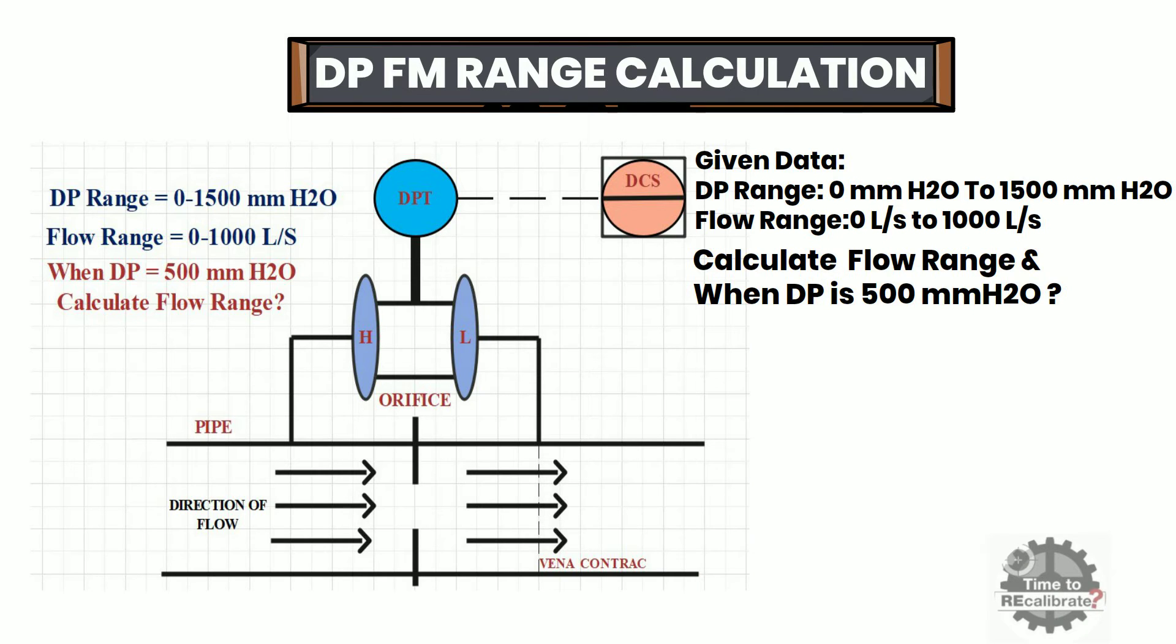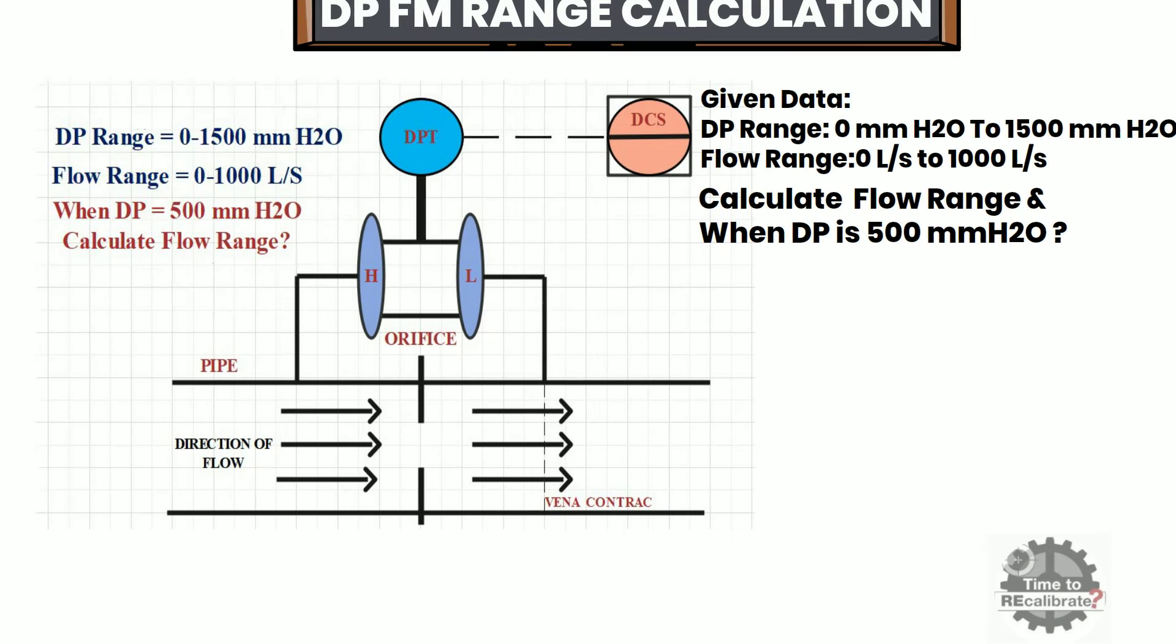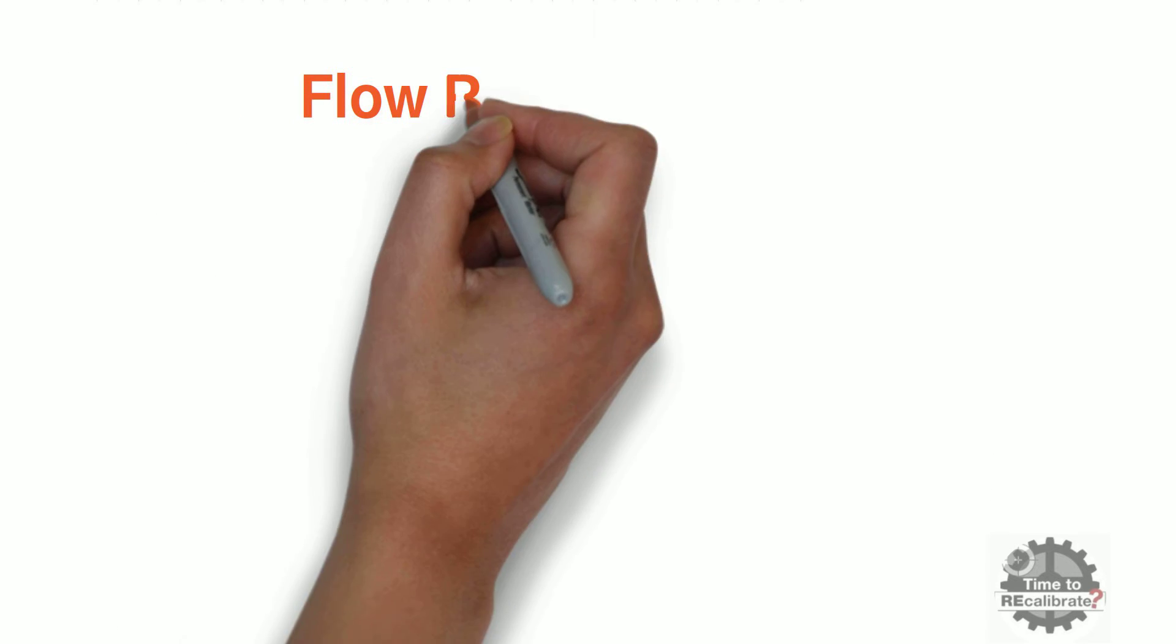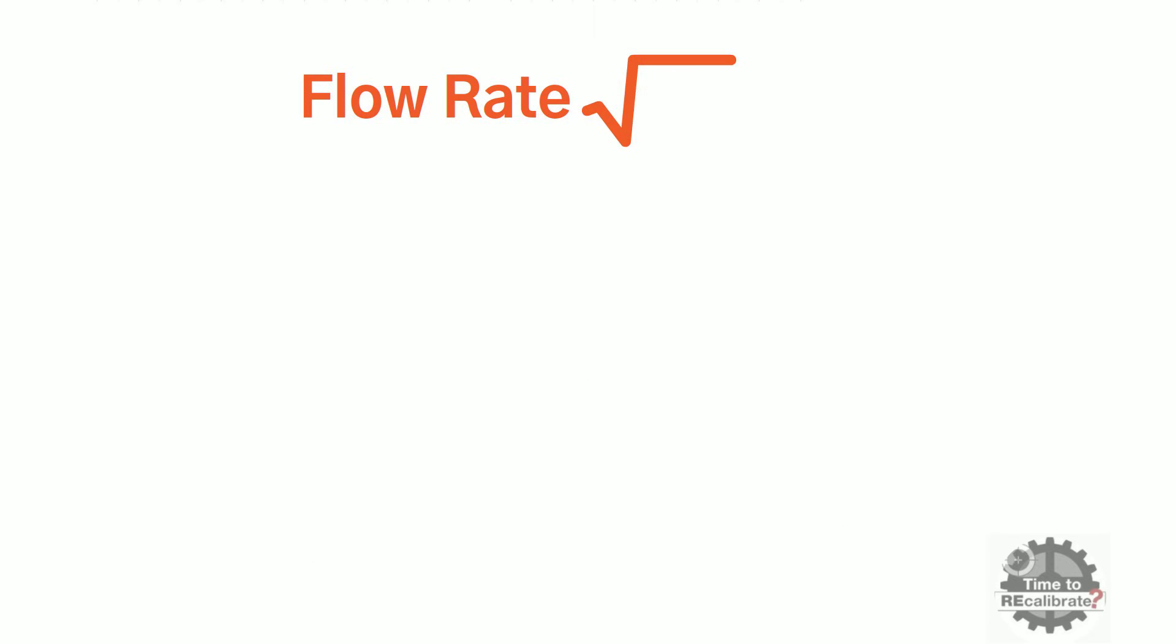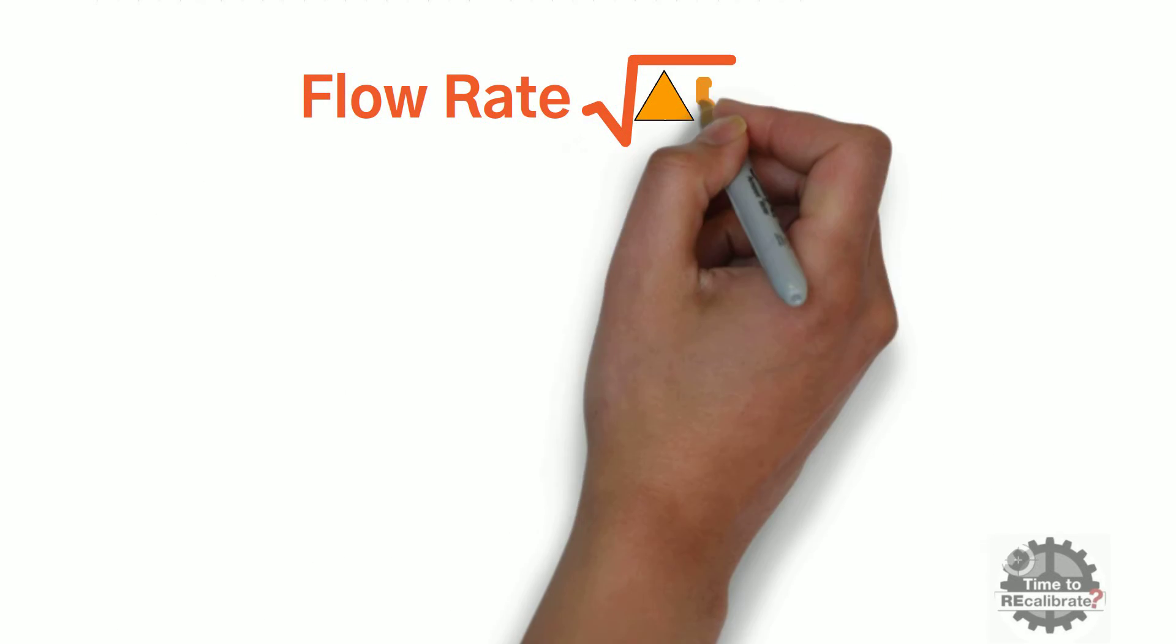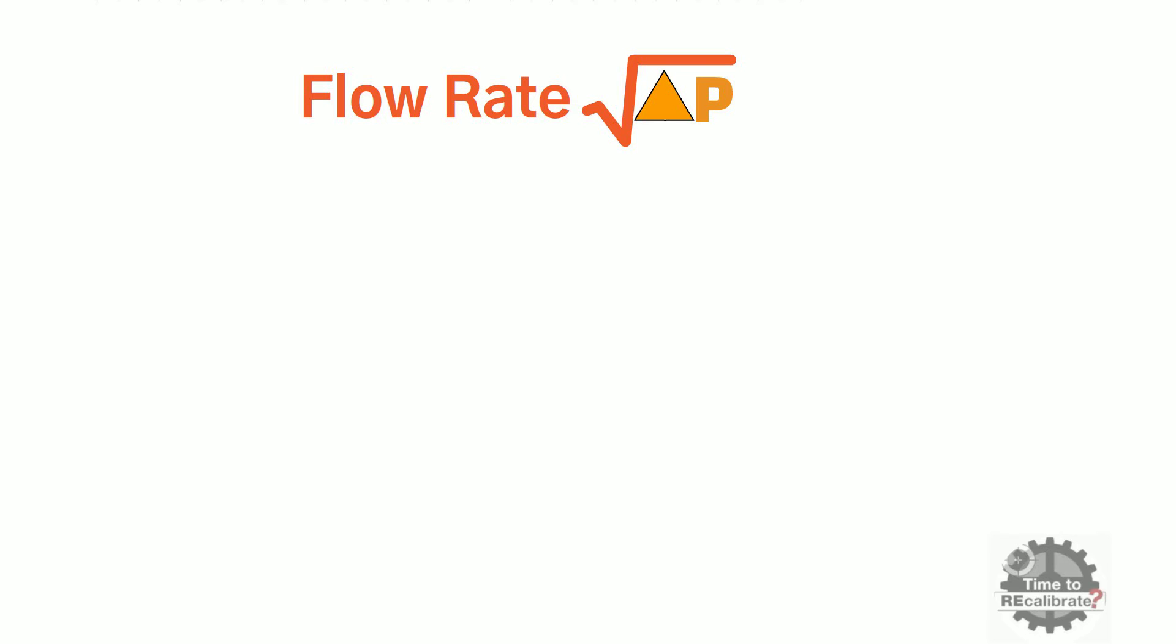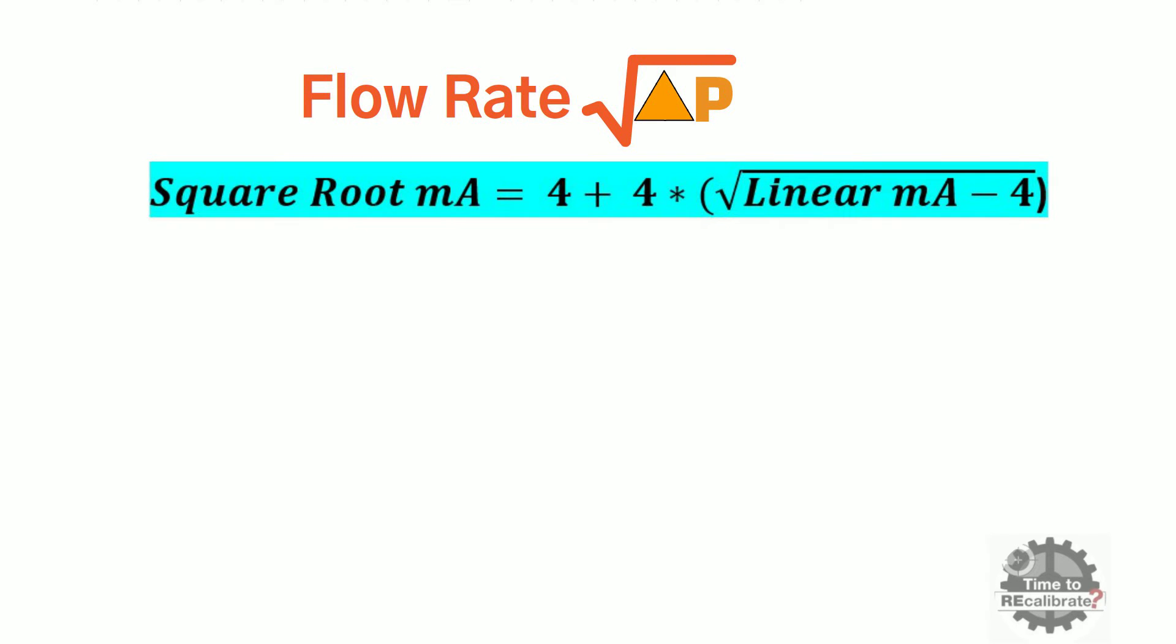Now let's go to the calculation. As we know, flow rate is directly proportional to the square root of differential pressure. So to calculate the flow range of a DP flow meter, we need to calculate square root milliampere first. This is the standard equation to calculate square root milliampere. As you can see from this equation, we need the linear milliampere value to find the square root milliampere.